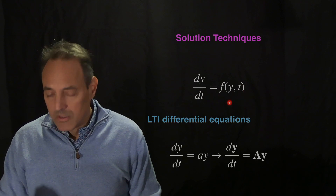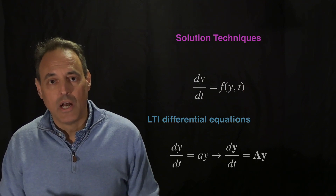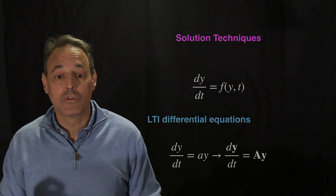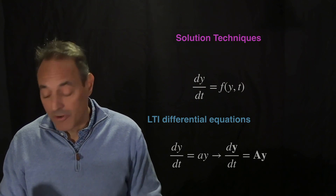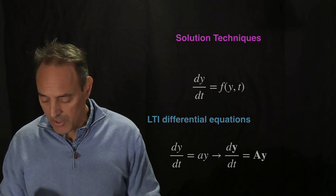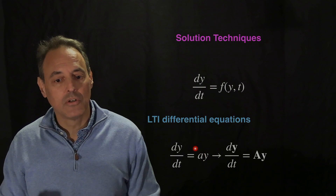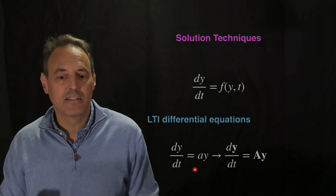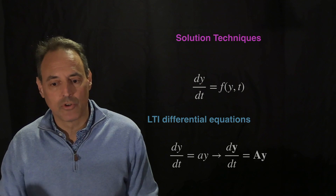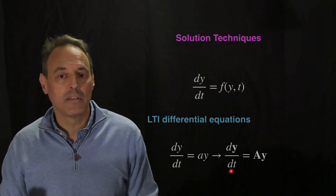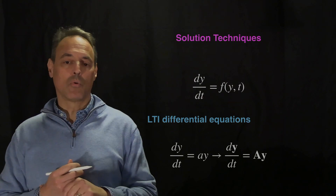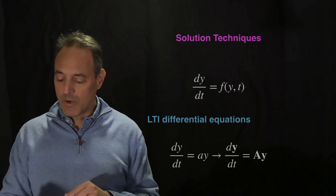In general we don't know how to solve this equation unless we have very specific forms of f. What we're going to assume is we move to an LTI system — linear time invariant. So f is now linear and the time dependence disappears. For one dimension: dy/dt = ay, the simplest linear model. More broadly, if y is a vector — a system of differential equations — this becomes dy/dt = Ay, where A is a matrix.